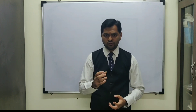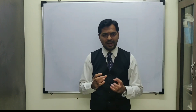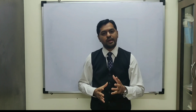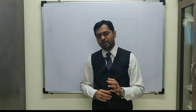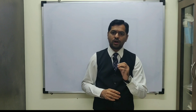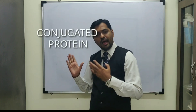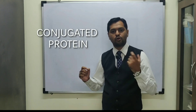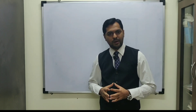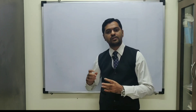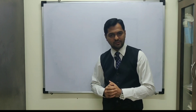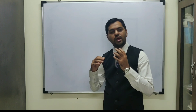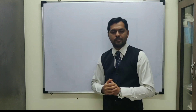Hemoglobin also maintains the viscosity of blood. It is a conjugated protein consisting of a heme part — the iron (Fe²⁺) porphyrin complex — and a globin part, which is the protein portion consisting of four polypeptide chains.